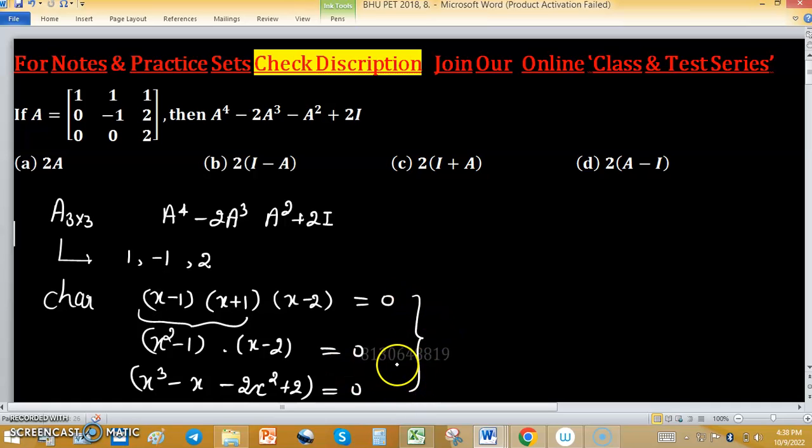A matrix satisfies its characteristic polynomial, that's why A cube minus A minus 2A square plus 2 times identity equals to 0.